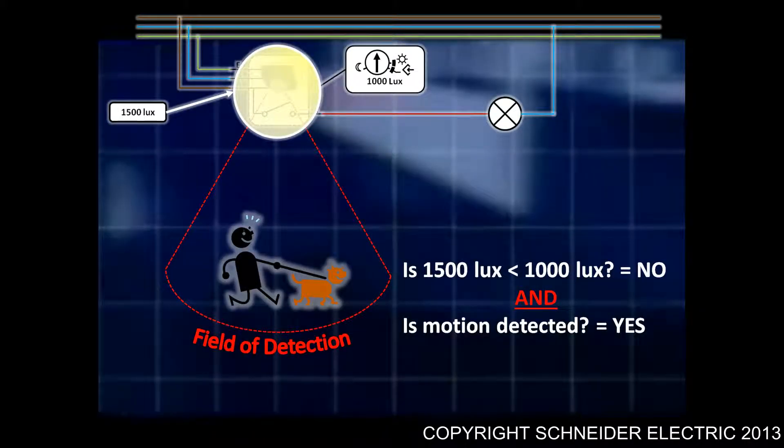Is the ambient light less than 1000 lux? In this particular case, it's actually greater, so we say no. And is motion being detected? Yes. In this particular case, what happens is nothing. The sensor has detected that there is sufficient light within that area and it's not going to turn on that light. So the light remains off.